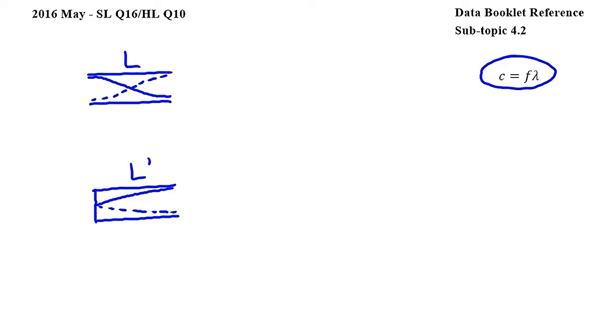So for the first pipe we get c is equal to f times, and as we said earlier, we see half of a wave in this pipe, so the wavelength of the entire wave will be twice the length of the pipe, in other words 2L.